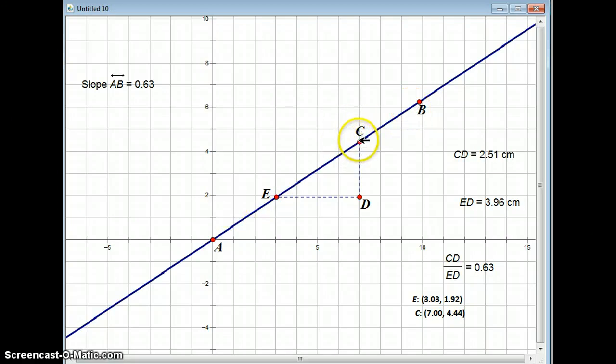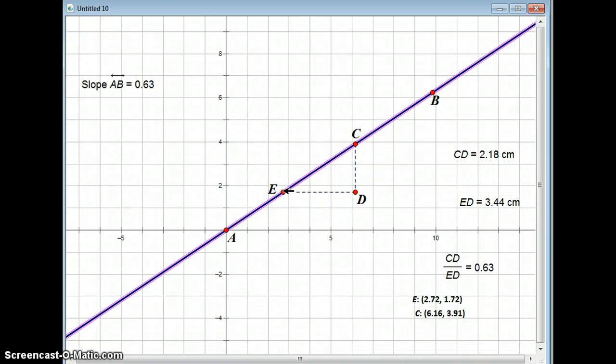First of all, I just want to show you that it doesn't matter which two points we pick on the line. If I pick these two points, they're kind of close together. I've got a really small number for CD, a much smaller number here for ED. But when we divide them still, it's still 0.63. This is still 63% of ED, and I could make them really far apart, and it's still 63%. It doesn't matter which points I pick. I'm going to watch the coordinates change down here with E and C. They can change quite a bit, and the slope is still the same.